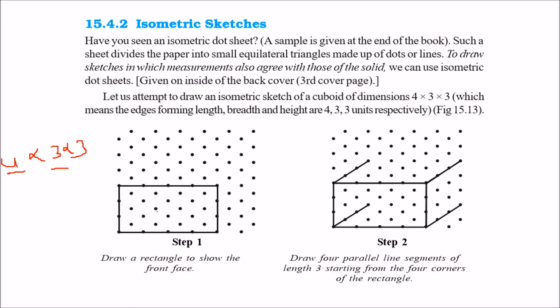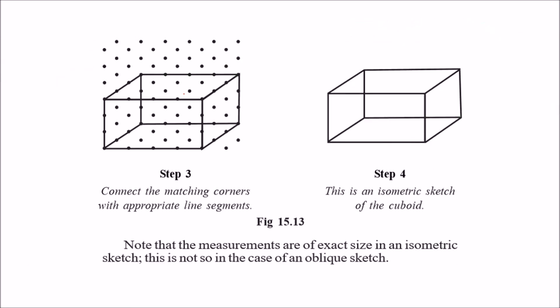Here, if we have to draw 4 by 3 by 3, so 4 is the length, 3 is the breadth. Let us draw the length and height first. This is length, so we took 4 dots: 1, 2, 3, 4. And 3 is the height: 1, 2, 3. Now 3 is the width, so we extend these with three points. Now we join them. See, the final figure would be something like this. We connected the matching corners with appropriate line segments, and this is the isometric sketch. We see the measurements are exact. If you take the oblique sketch, it may not be exact.